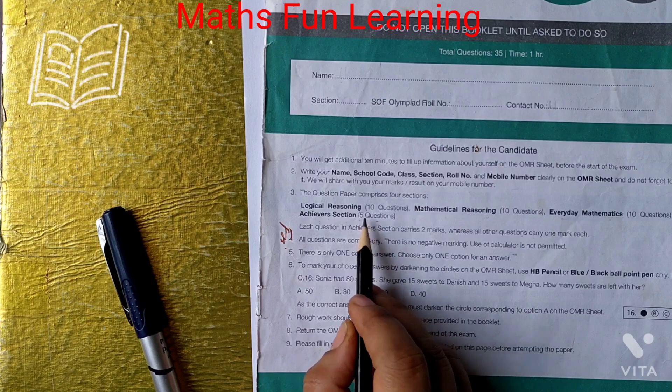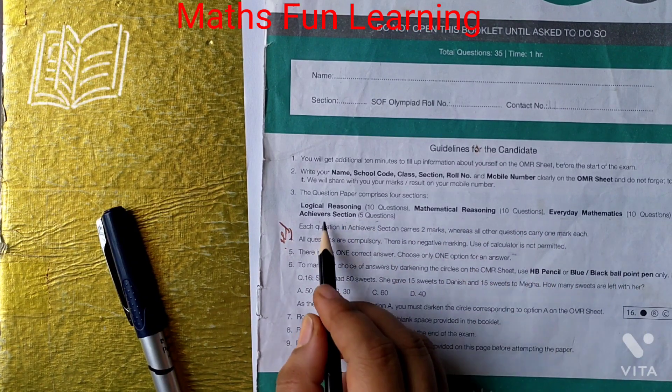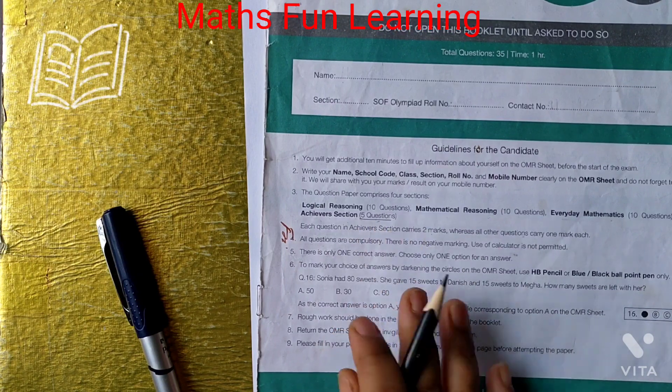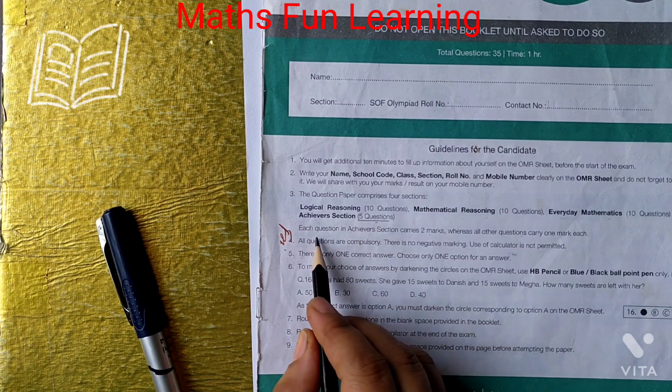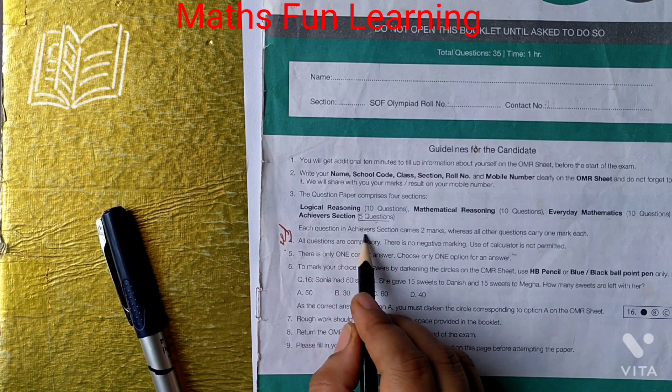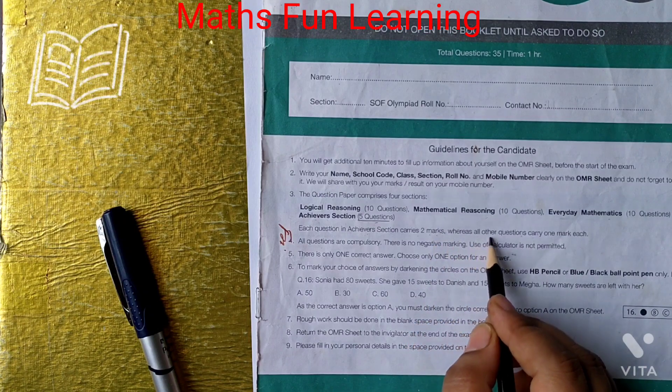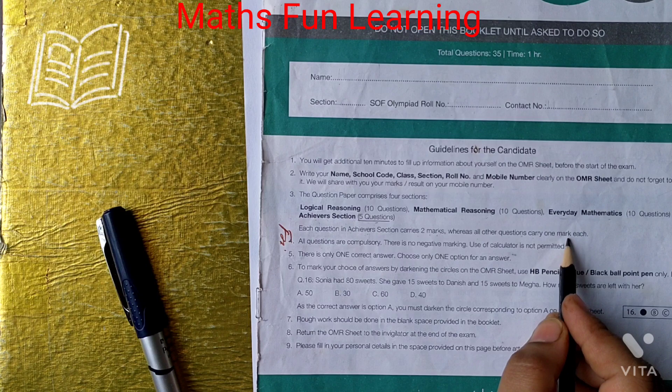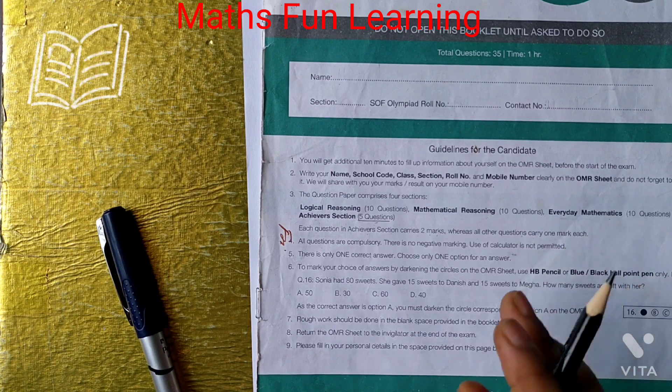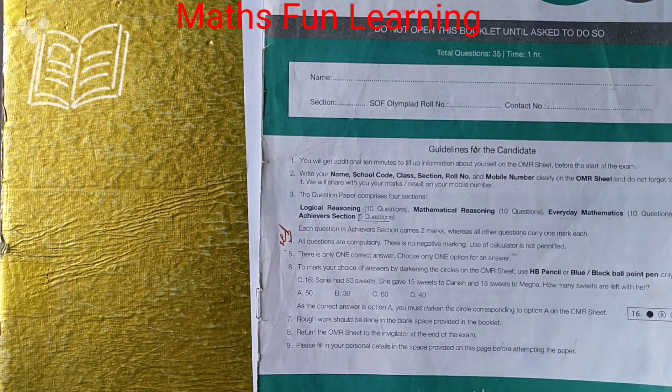Achiever section is very much important in this Olympiad paper. Why? Because it has only 5 questions in class 4. It has only 5 questions and each question of achiever section carries 2 marks, whereas all other questions carry only 1 mark each. So let's don't waste time, let's start.